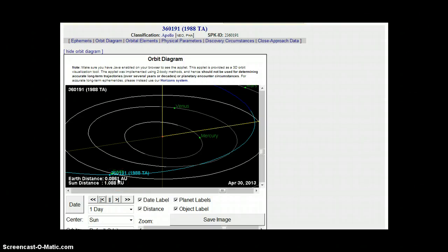As you can see, this asteroid's name is 360191 1988 TA. Right now it is exactly 0.0861 astronomical units from the Earth.